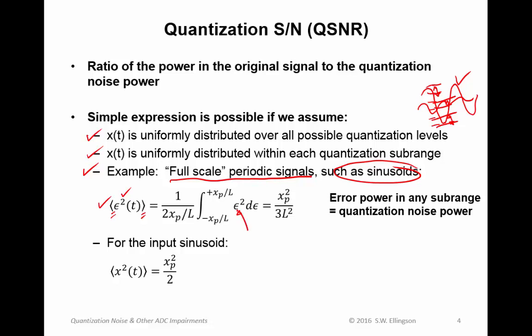In that case, we can compute the quantization noise power. Power is just the time average of the square of the magnitude of the quantity. So here is my error. And I simply square it and integrate over the sub-range. x_p is the magnitude of the sinusoid. So if that occurs over L sub-ranges, then each sub-range is x_p divided by L.